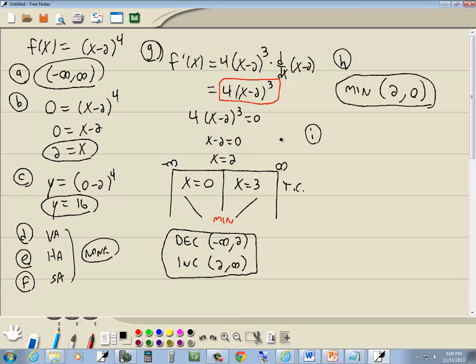Concavity. We want to take the derivative again. So we want to find our second derivative. So the 4 stays out in front. Here we've got parentheses to a power. So I take my power, put it out in front. What's inside the parentheses remains as is. Lower your power by 1. And then you multiply it times the derivative of what's inside the parentheses. So 4 times 3 is 12 times x minus 2 squared. And the derivative of x minus 2 is 1, so it drops away.